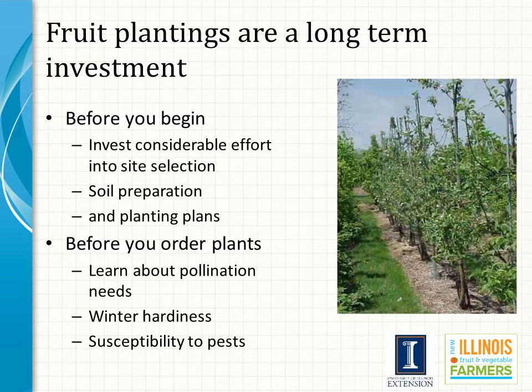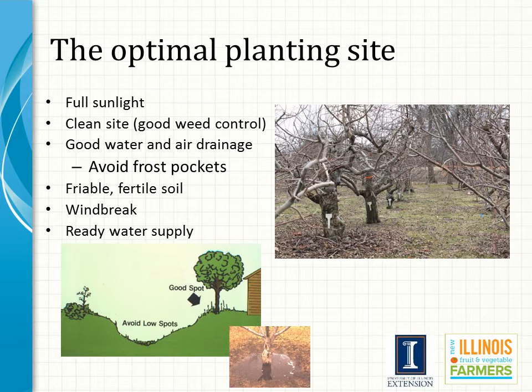Before ordering plants, one should also learn about their pollination needs, their susceptibility to pests, and understand whether your plants are winter hardy and adapted to your site. Fruit plants are most productive if you carefully match them with the proper planting site, which in general is a site that is not susceptible to frost, receives full sunlight, has fertile, well-drained moisture-retentive soils, and is weed-free.